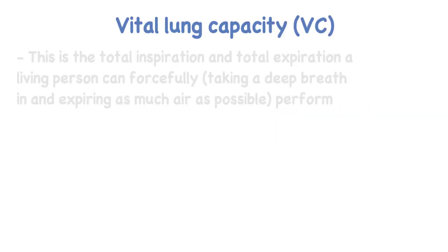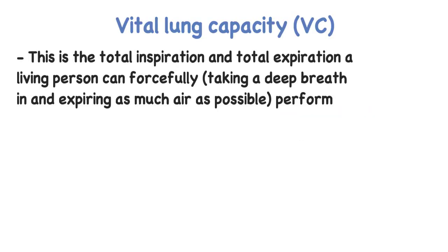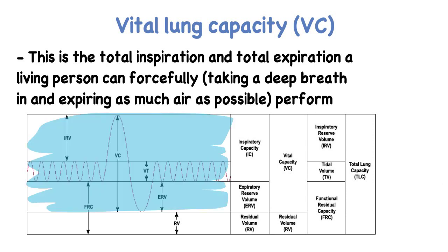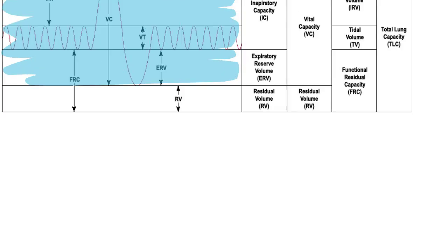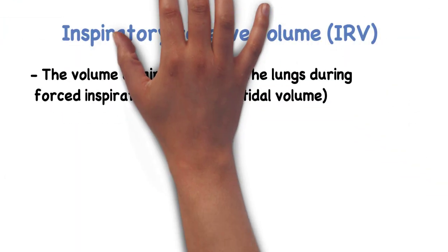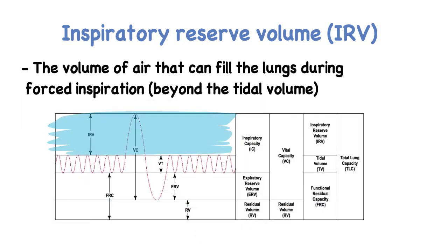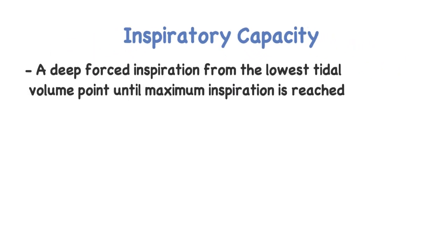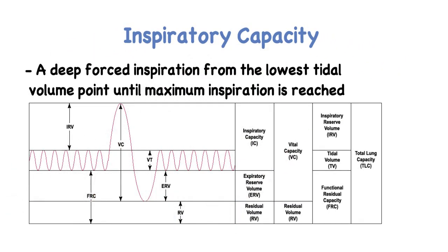The vital lung capacity is the total inspiration and expiration a living person can forcefully perform. The inspiratory reserve volume is the volume of air that can fill the lungs during forced inspiration. The inspiratory capacity is the deep, forced inspiration from the lowest point of the tidal volume until maximum inspiration is reached.